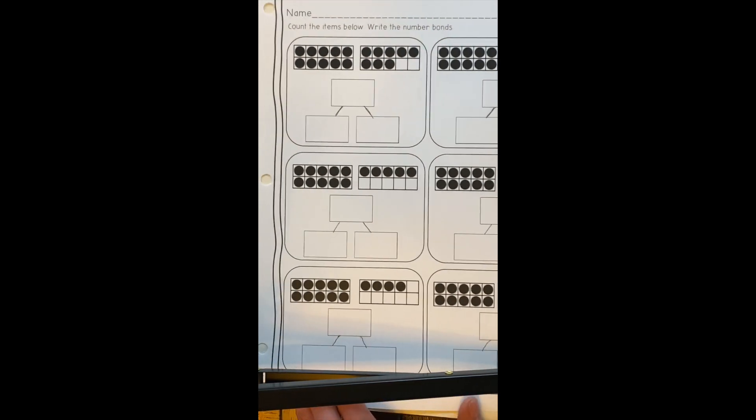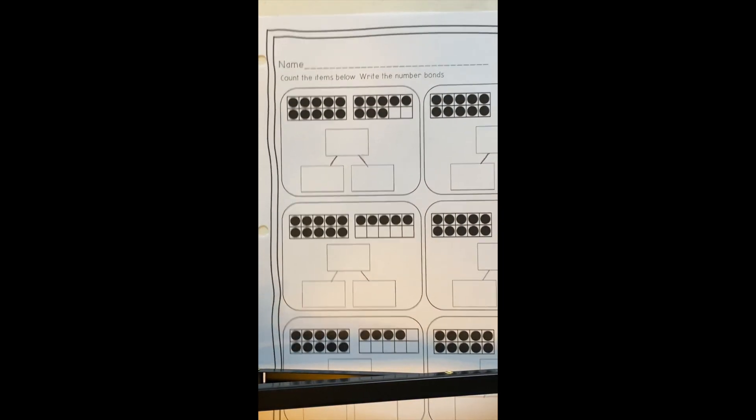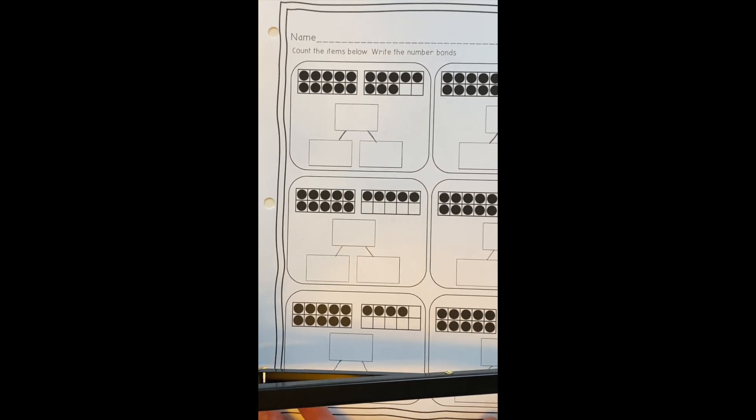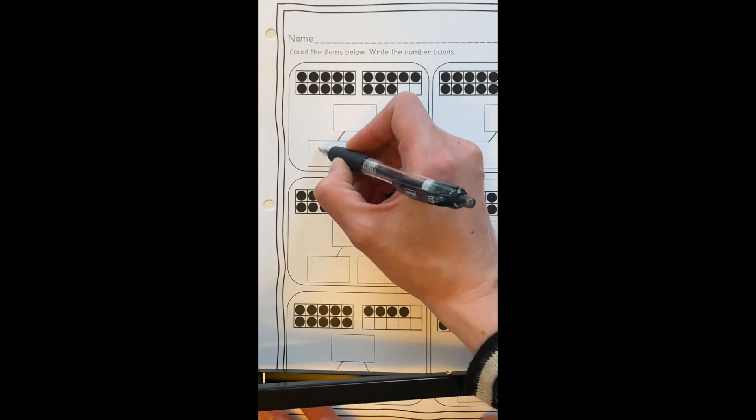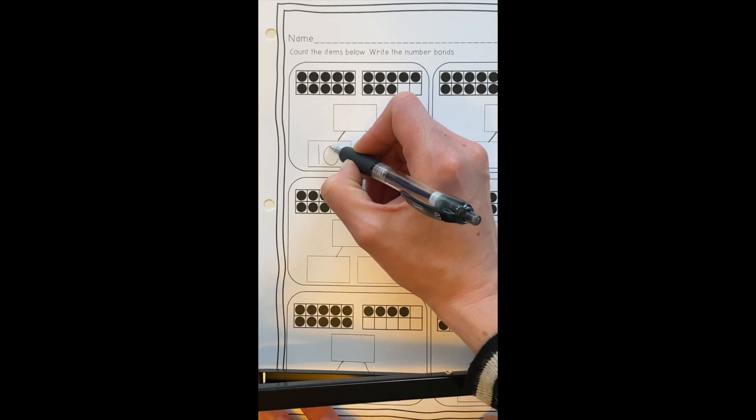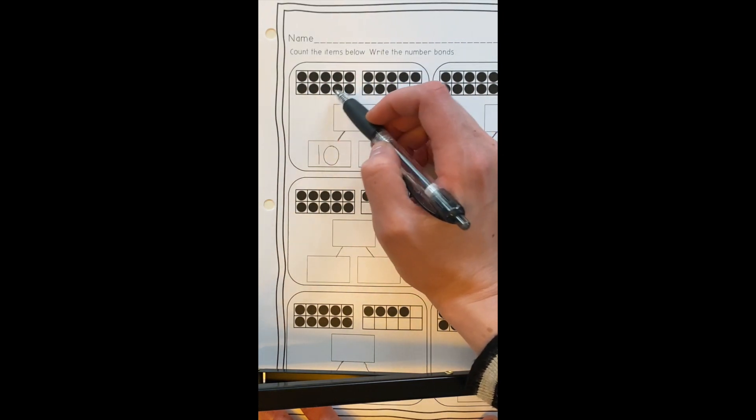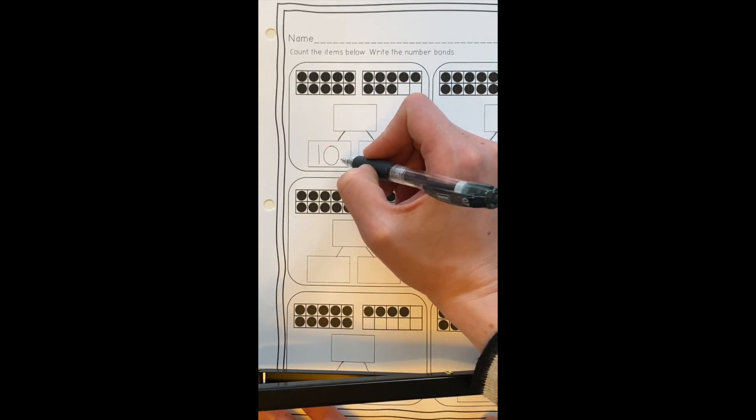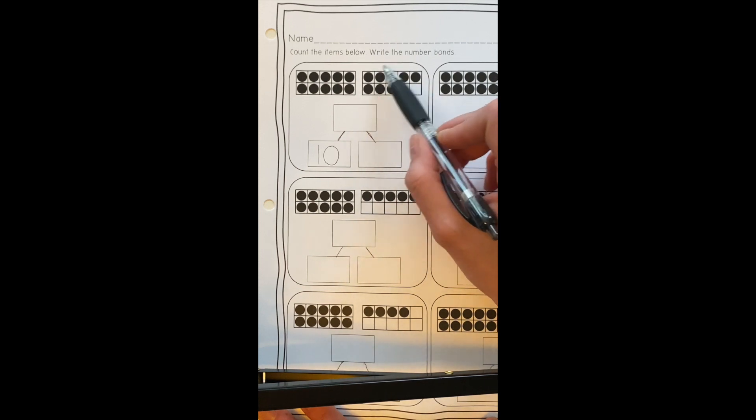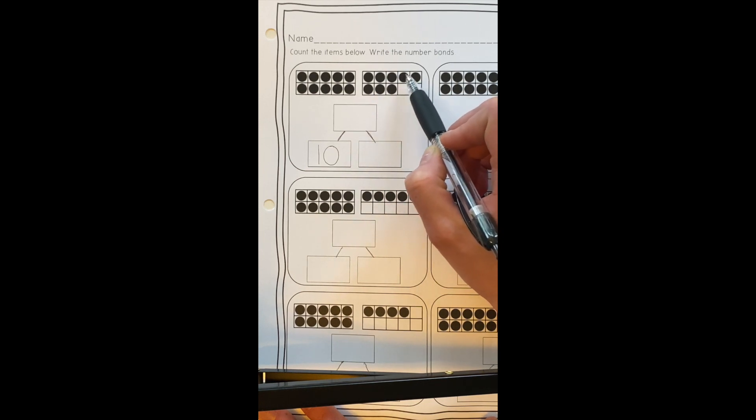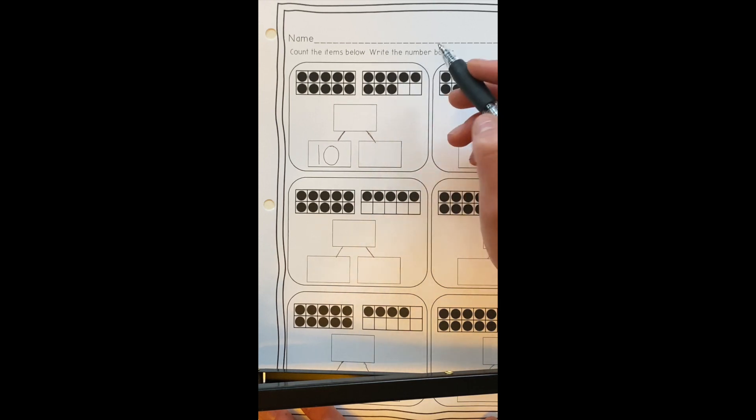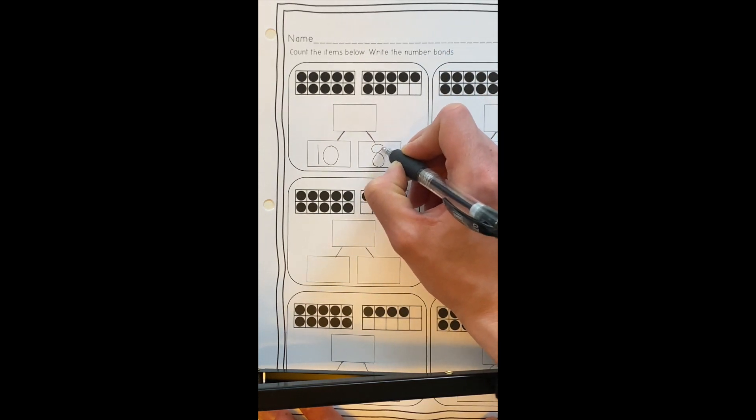We're going to start by looking together at this first problem up here on the top. We're going to do two together and then you'll do the rest on your own. We can see that we have one ten frame that's all the way filled up and then this one isn't full. So we know that we're going to have one ten and then we're going to have some ones. We're going to write ten in our first part. And then we need to figure out how many ones we have in our other ten frame. So let's count them: one, two, three, four, five, six, seven, eight.